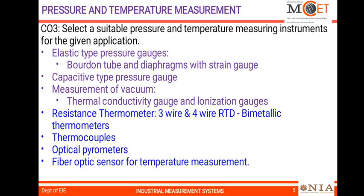CO3 deals with pressure and temperature measurement in industries. For pressure measurement, topics include Bourdon tubes and diaphragms with strain gauges — Bourdon tubes being mainly used for pressure measurement with indication only. Capacitive type pressure gauges are also covered, as most industrial pressure measurements use differential pressure transmitters based on capacitive principles. For low pressure measurement and vacuum, thermal conductivity gauges such as Pirani gauges and ionization gauges are included.